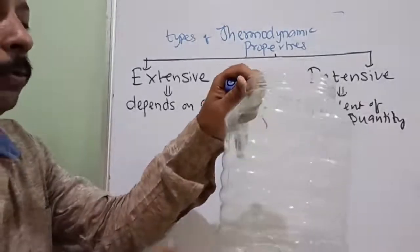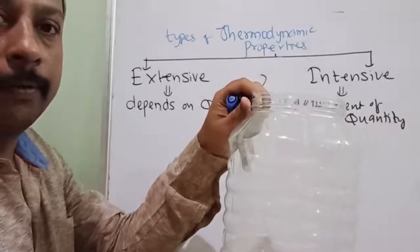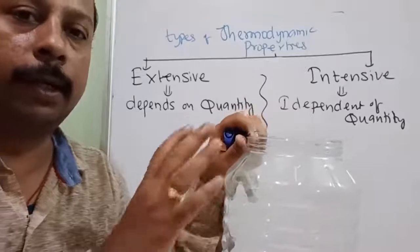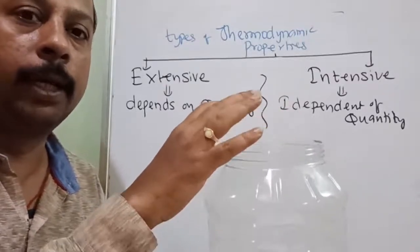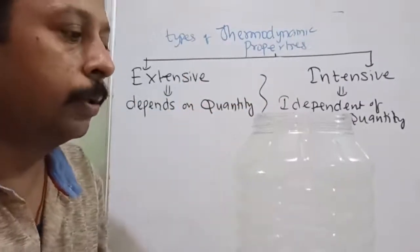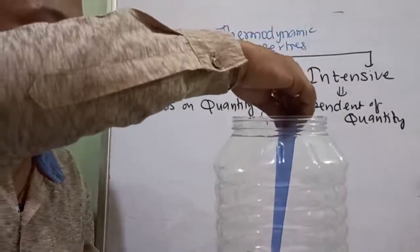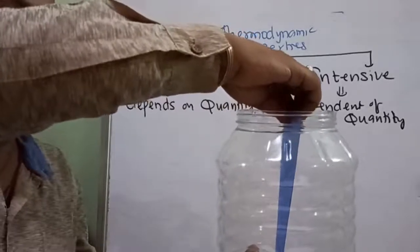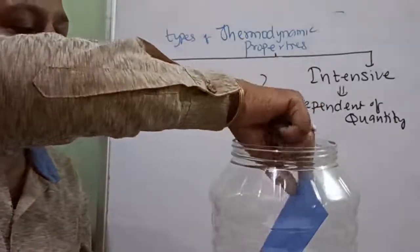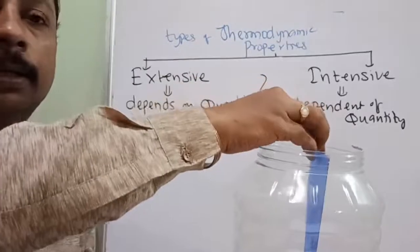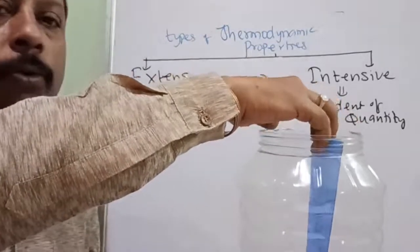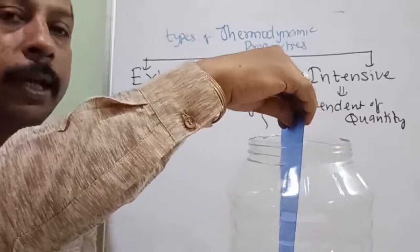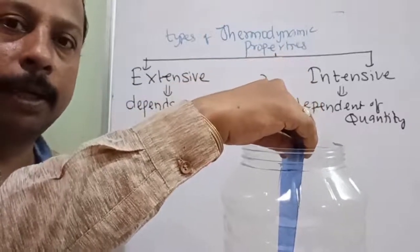Take a container — volume is 5 liters, pressure is 1 atm, and temperature is 27 degrees Celsius. Now the same container is separated into two identical parts by a thermally conducting material. What is the volume of each part? It will be 2.5 liters. And the temperature was 27 degrees — what will the temperature be in each part? Still 27 degrees. Even though we divided into two parts and the quantity is made half, temperature is not depending on quantity.